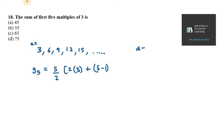So the difference is 3 here. Why? Because 6 minus 3 is 3. So D can be written as 3. We have 5 over 2 in bracket 6 plus 5 minus 1 is 4, 4 into 3. So you get 5 over 2.